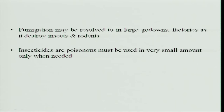Sometimes fumigation may be required, especially in large godowns where large quantities of food are stored, and in factories — fumigation destroys insects and rodents. All food factories should be fumigated once in a while to clear insects and rodents. Since insecticides are poisonous, they must be used in small amounts and only when needed.